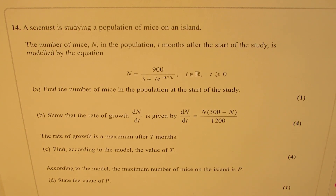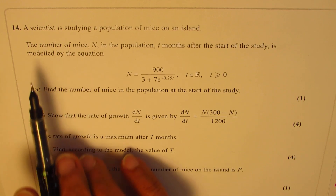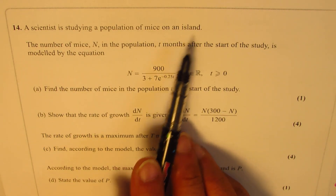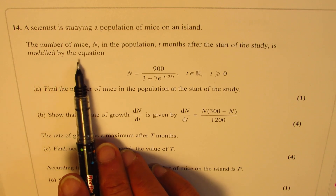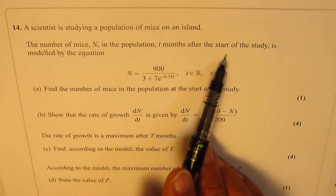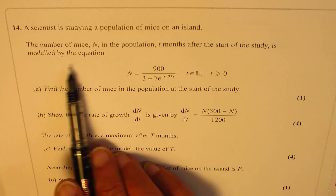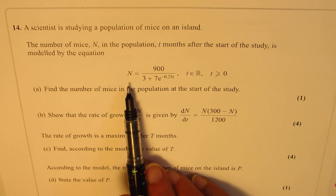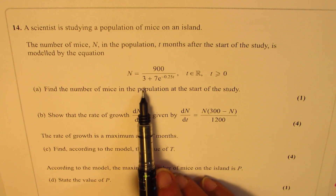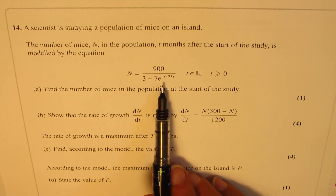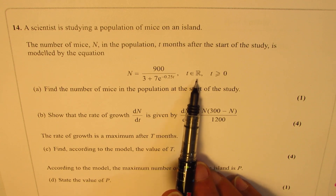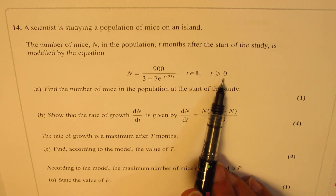The question here is: a scientist is studying a population of mice on an island. The number of mice n in the population t months after the start of the study is modeled by the equation n equals 900 over (3 plus 7e to the power of minus 0.25t), where t belongs to real numbers and is greater than or equal to 0.